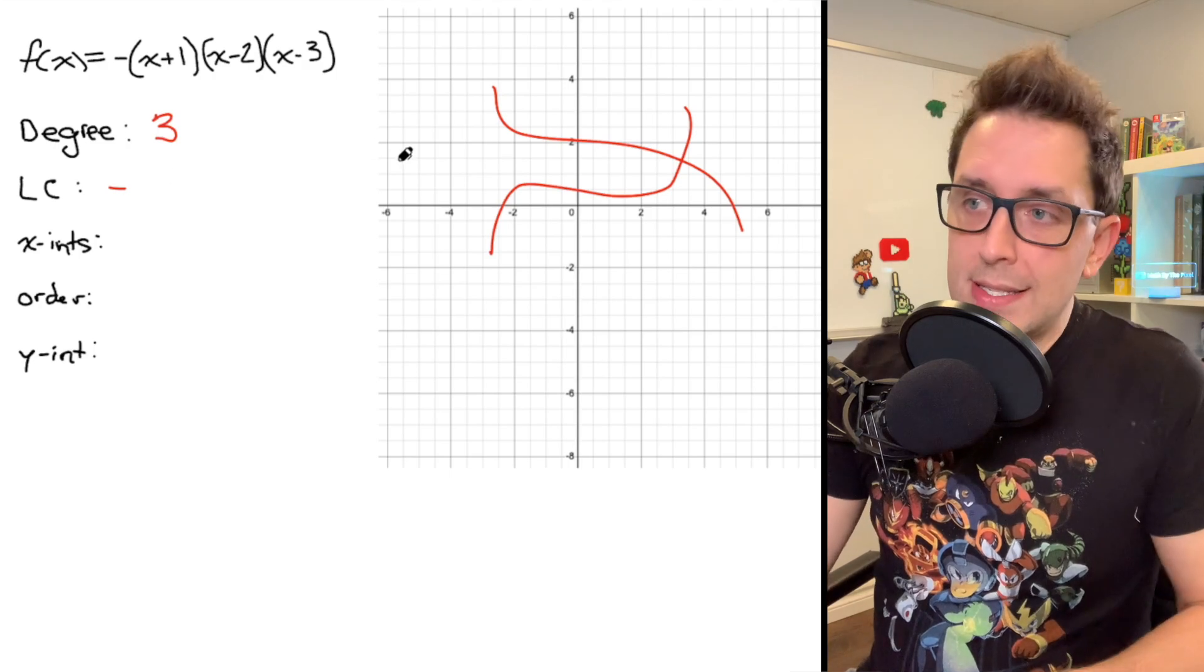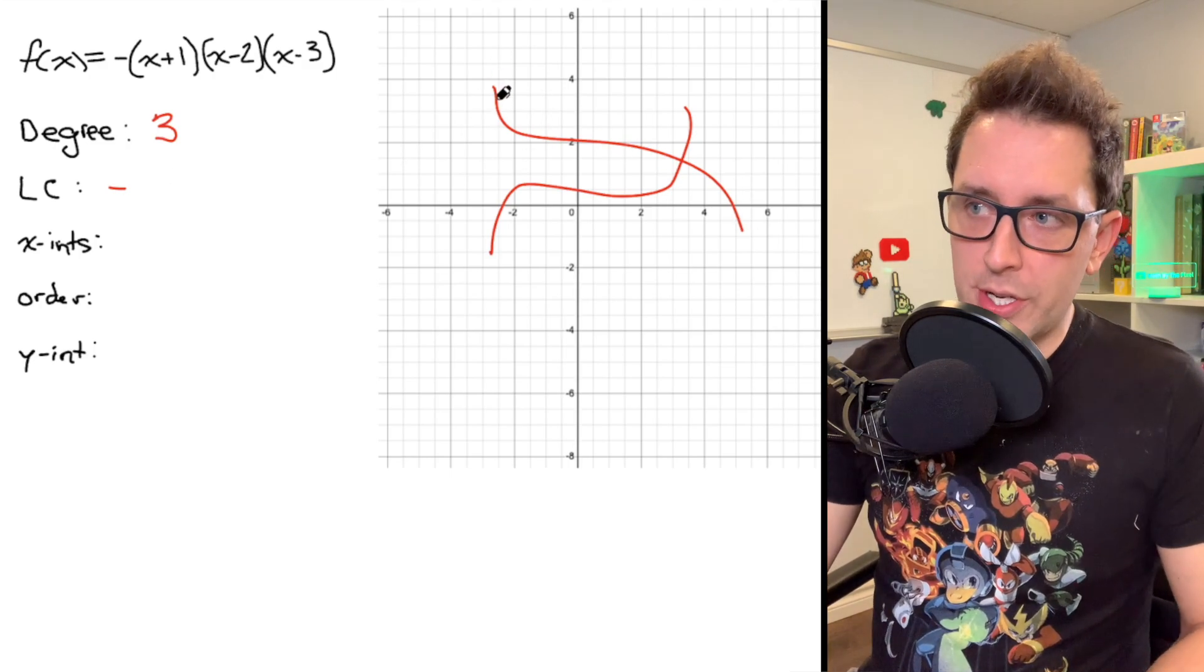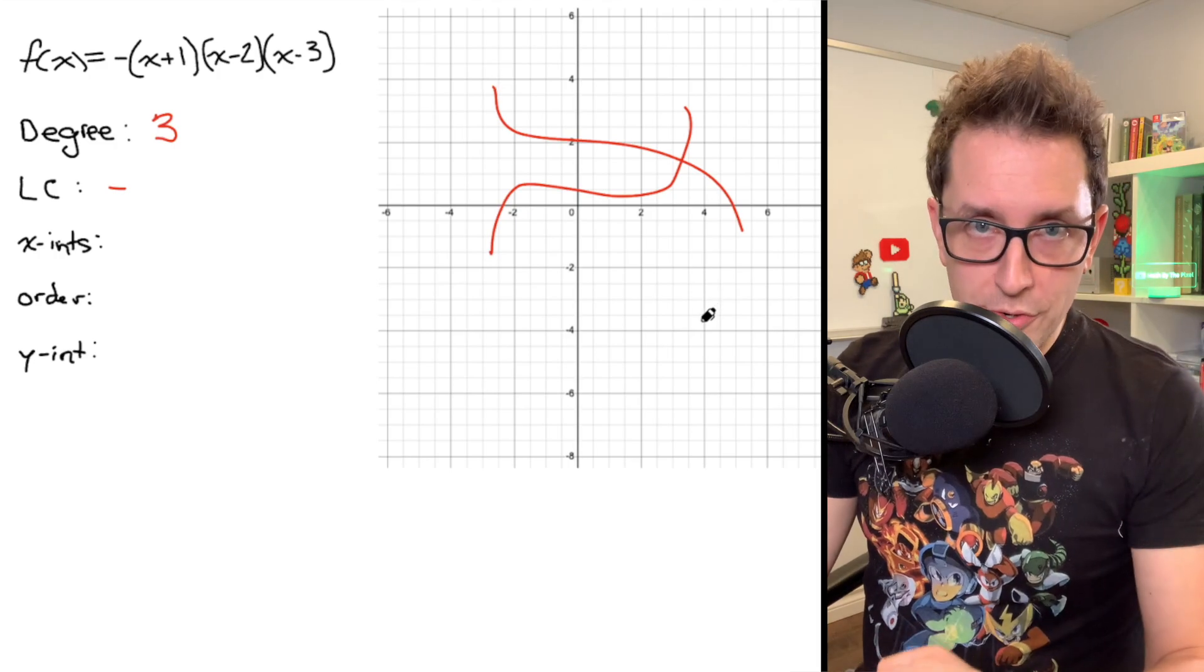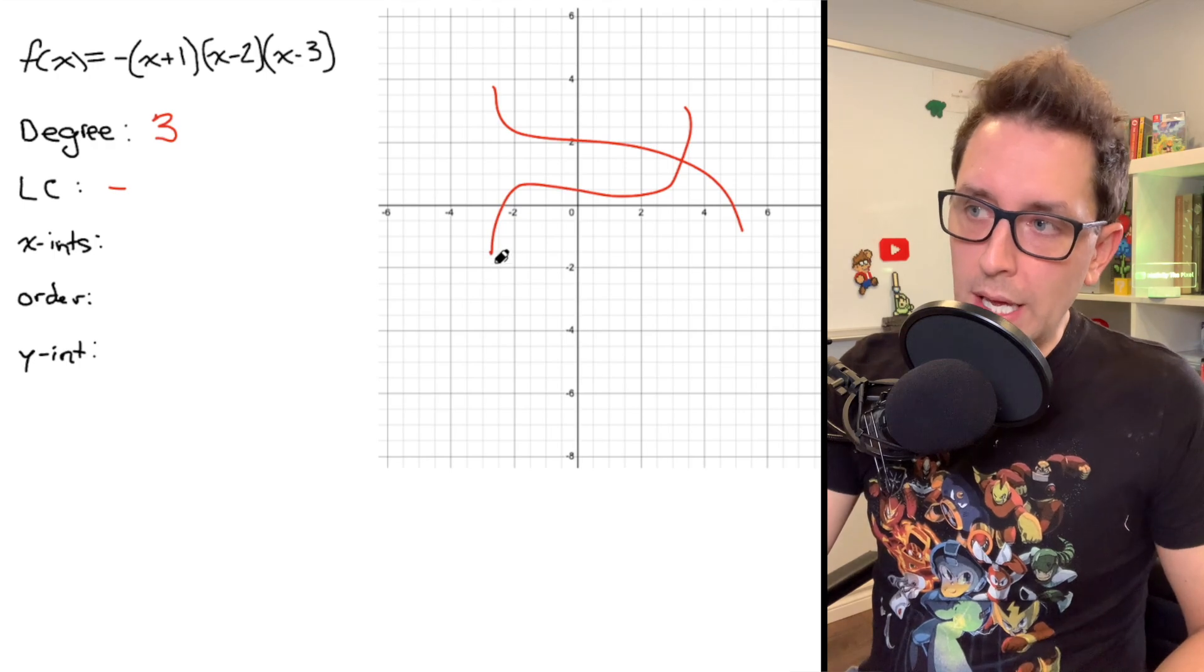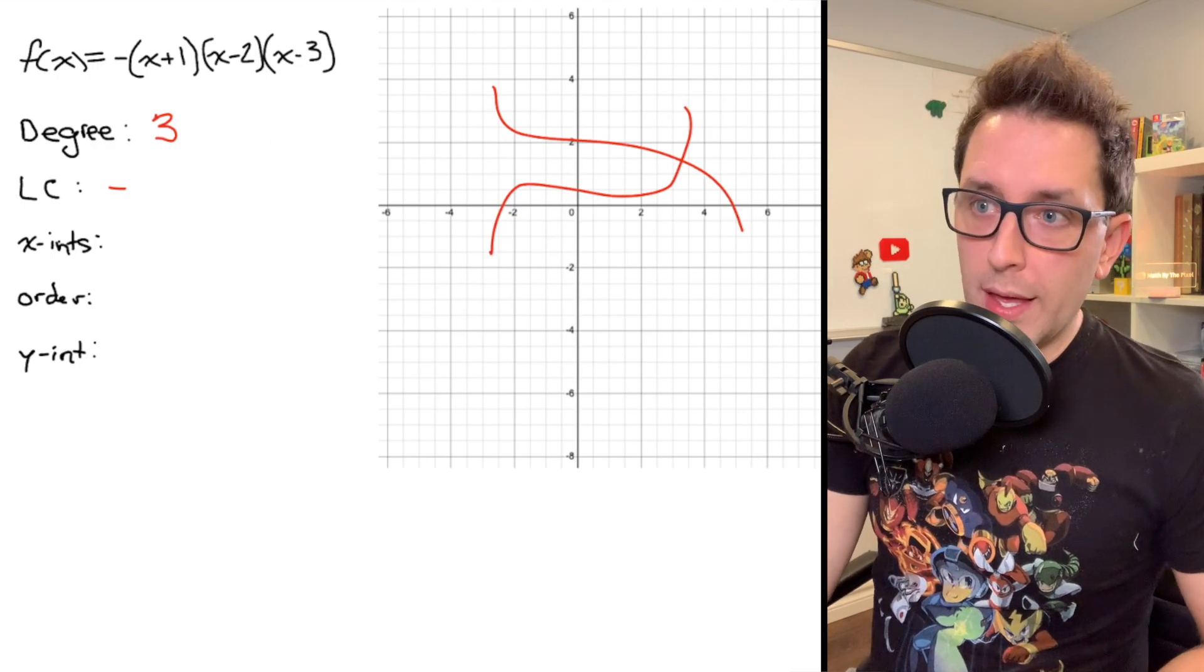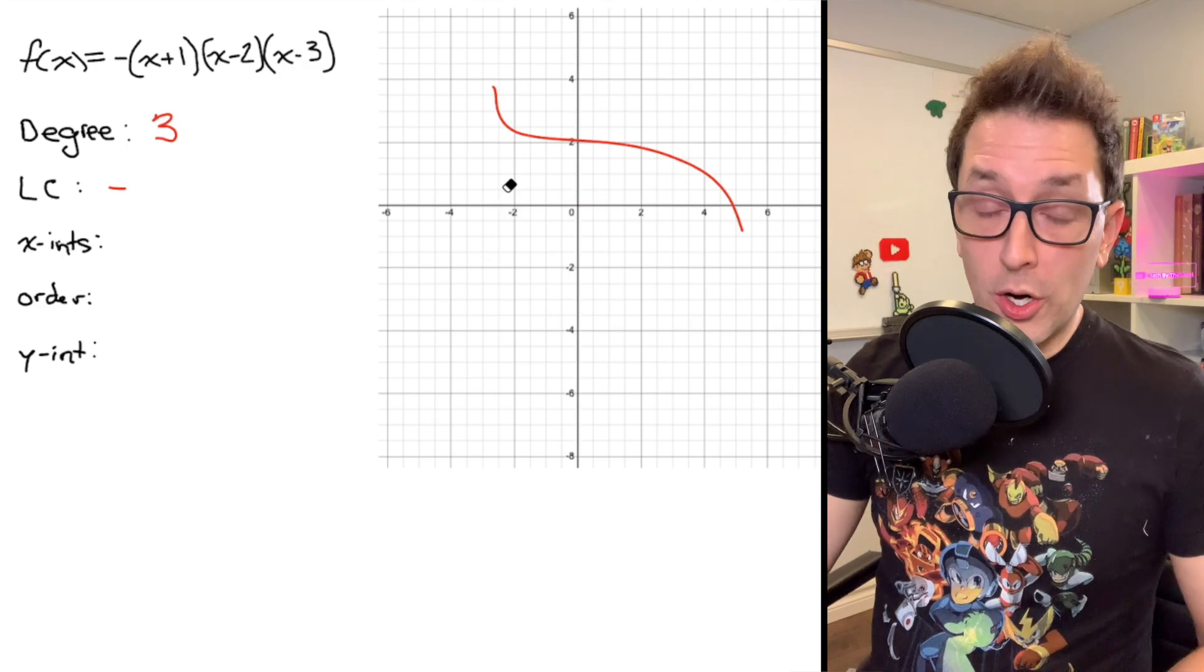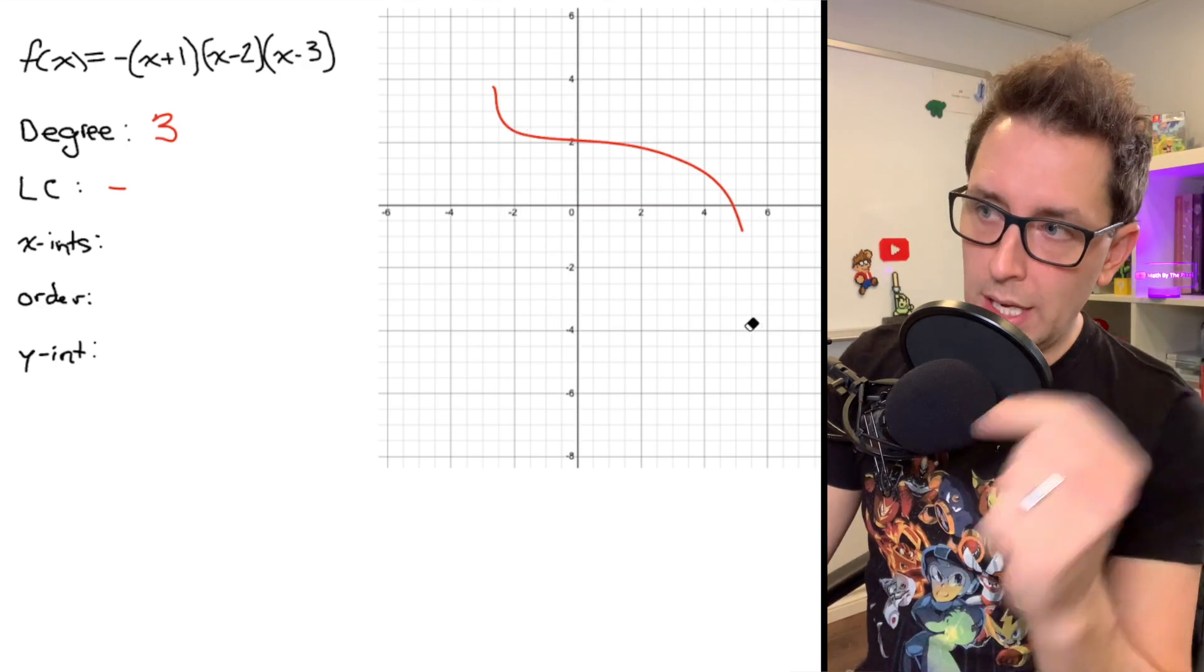Now that negative leading coefficient is going to tell me that we're working with a cubic that behaves like this one right here, starting in quadrant 2, ending in quadrant 4. A cubic function with a positive leading coefficient would start in quadrant 3 and end in quadrant 1. But we know, since we're working with a leading coefficient that is negative, our graph has to take the general shape of this cubic right here, starting in quadrant 2, ending in quadrant 4.